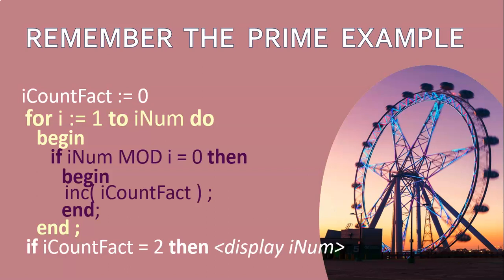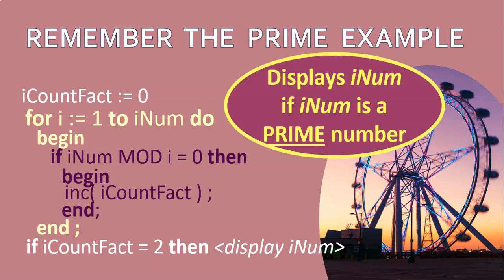At the end of the loop, we would check if the factor count equals two. After checking everything, if the count was two, we knew we had a prime number and could display i_num as a prime number. So that's the algorithm we used to find a prime number - it basically displays i_num if i_num is a prime number.